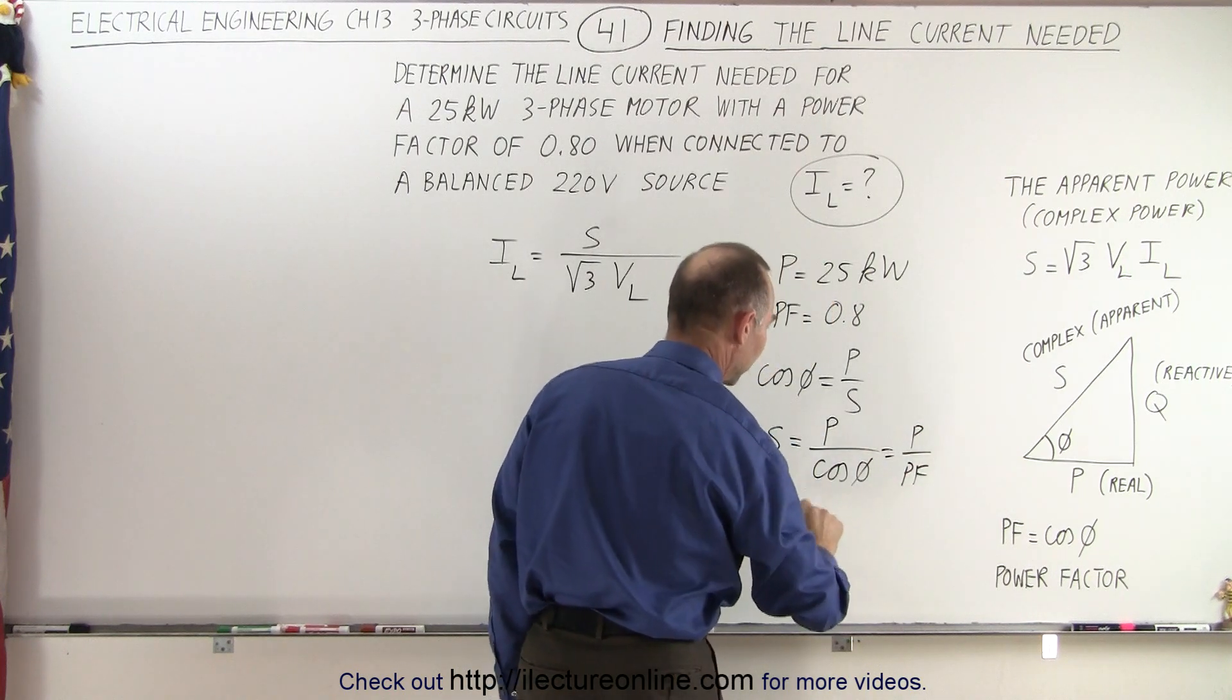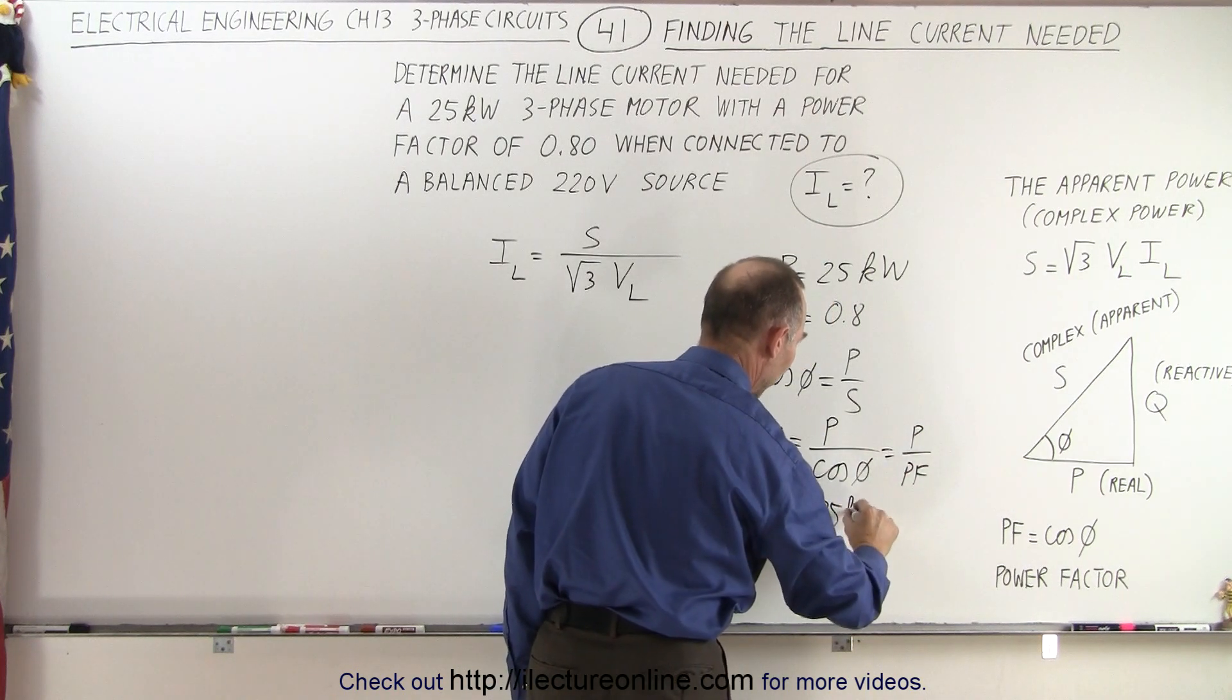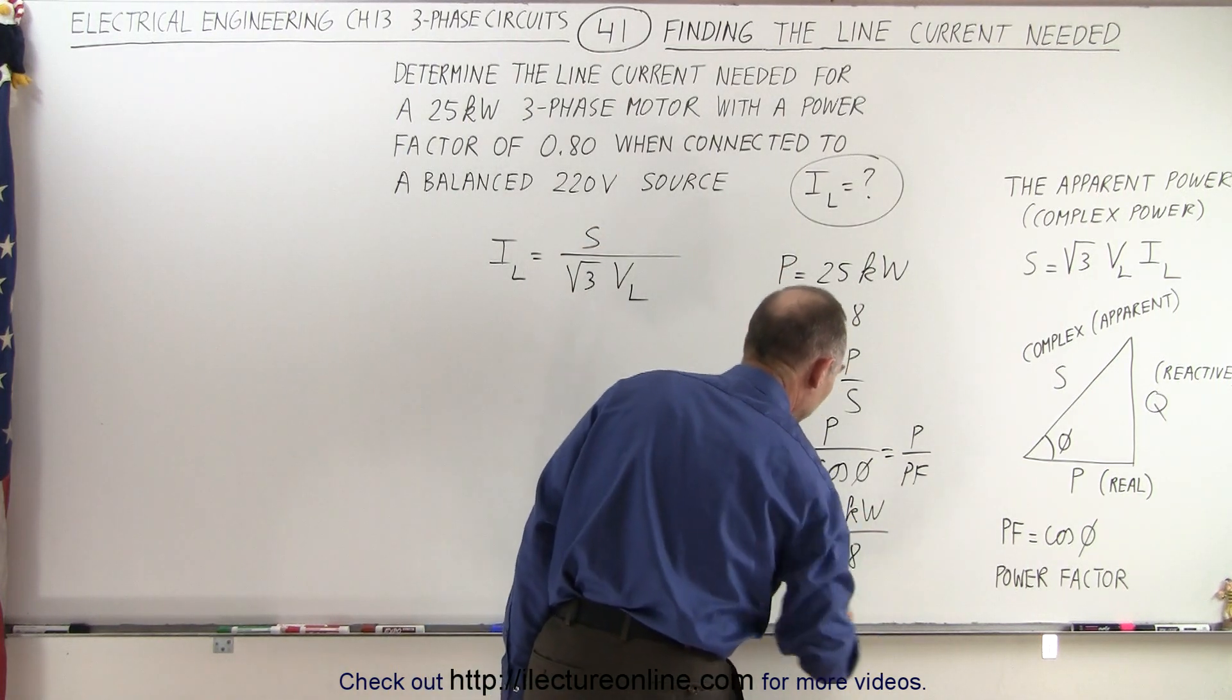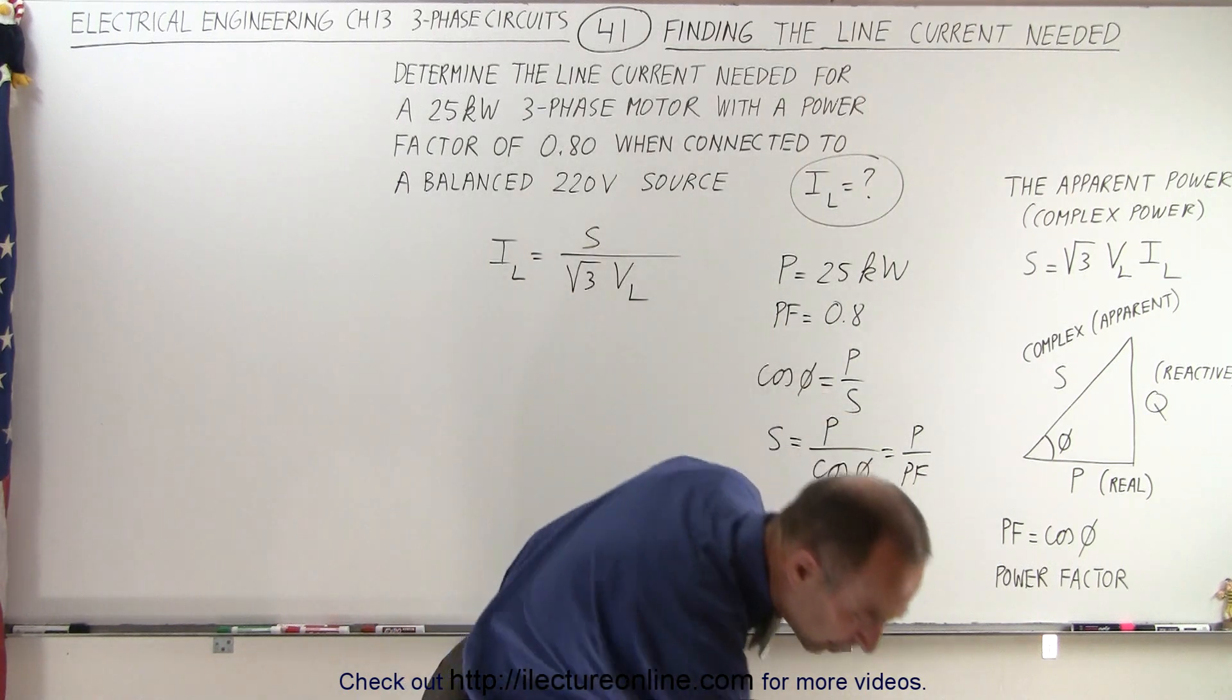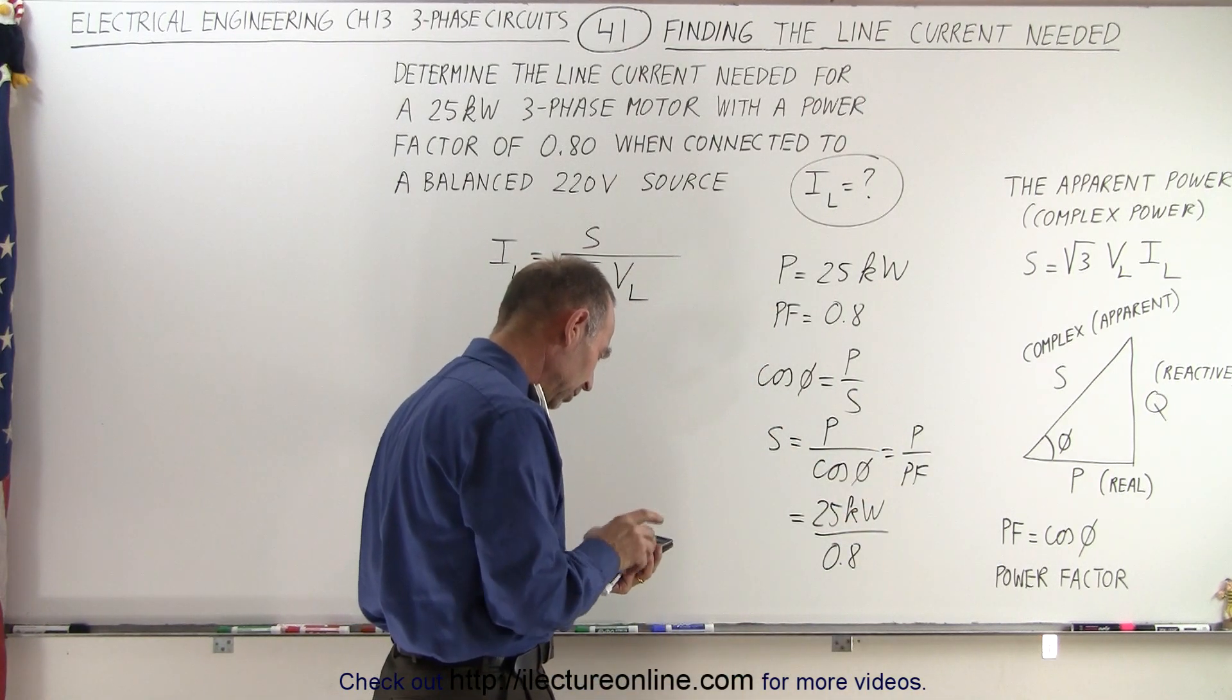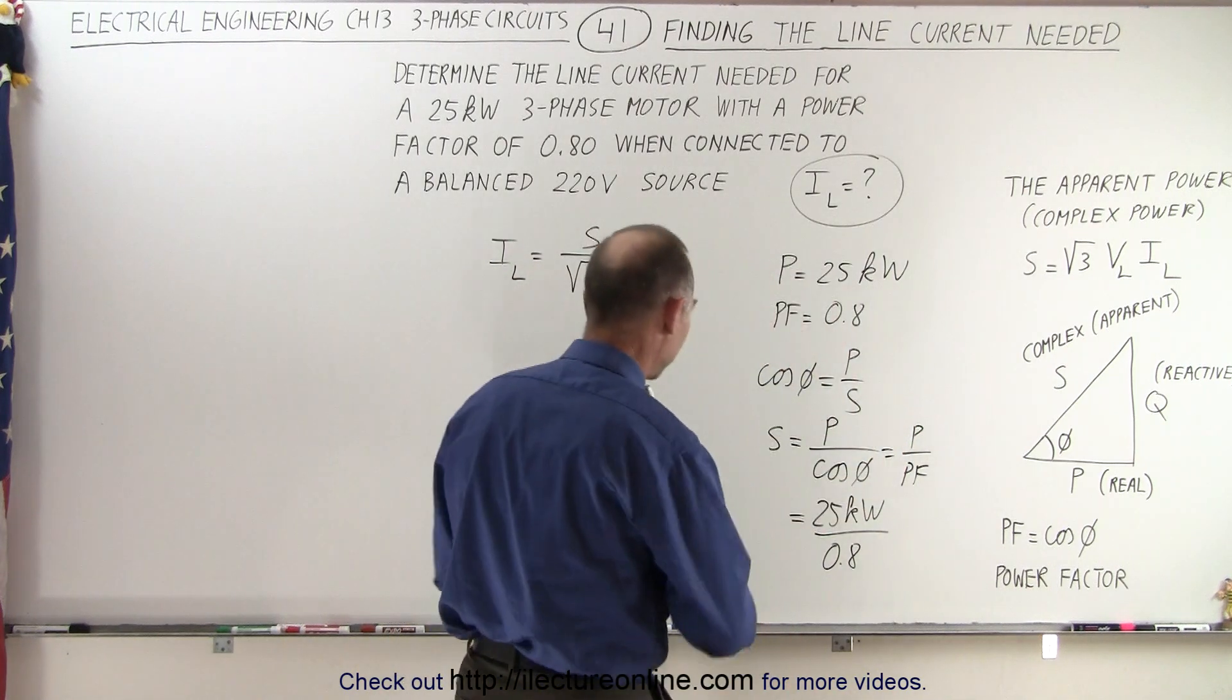In this case, that's 25 kilowatts, the power consumed by the motor, divided by the power factor of 0.8. So 25 divided by 0.8 equals 31.25 kilowatts.